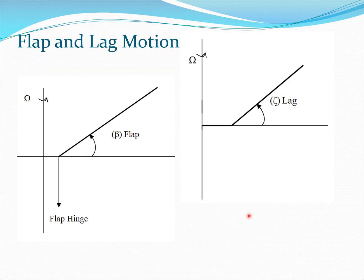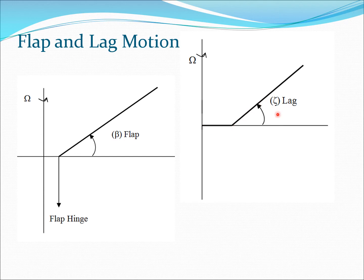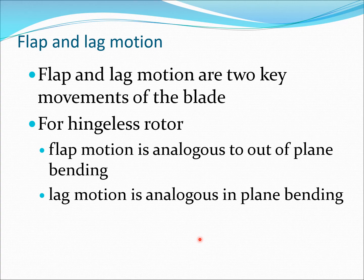In a side view of the rotor, the rotation speed, hinge offset, and flap hinge are visible, and the flap angle is beta. In a top view, there is an offset of the lag hinge, and the lag angle is given by zeta. So the lag motion moves in-plane, while the flap motion is up and down. Flap and lag motion are two key components of any rotor blade.